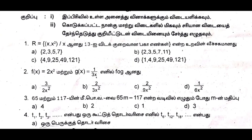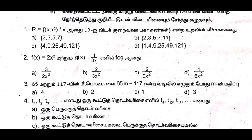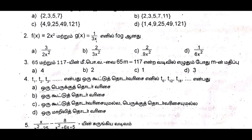So the first one is C option. The 2nd one is C option — 2x9x2. The 3rd one is C option.